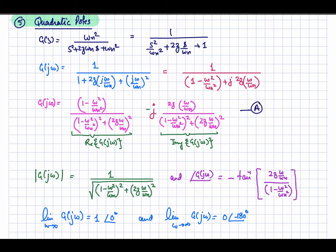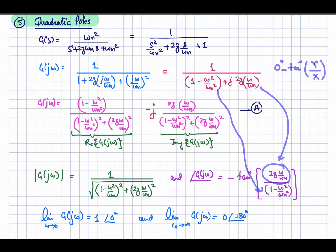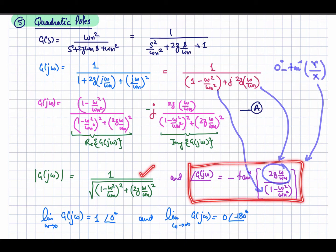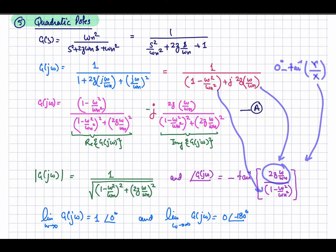To calculate the phase, take the arctangent of the imaginary part divided by the real part. The phase of the numerator is 0 minus the phase of the denominator, which is the arctangent of the imaginary part divided by the real part of the denominator. This gives the magnitude and phase for a transfer function with a complex conjugate quadratic pole pair.